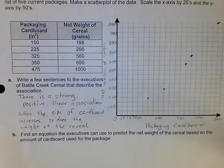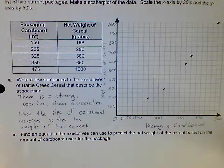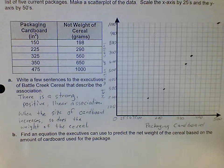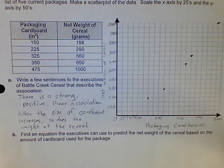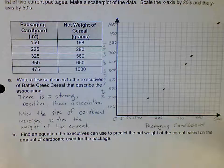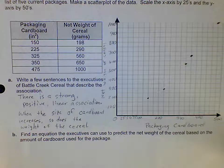The next question says find an equation the executives can use to predict the net weight of the cereal based on the amount of cardboard used for the package. So for this we need to draw a line of best fit. Once again, I usually pick two dots that I think fit the data really well.